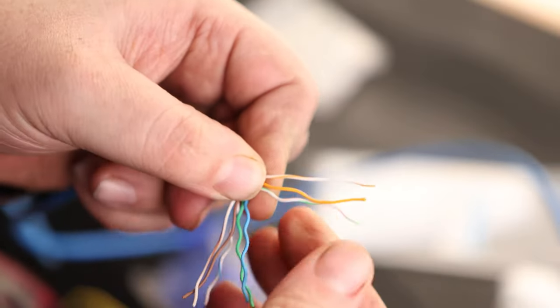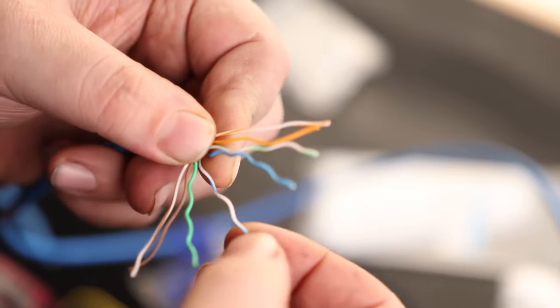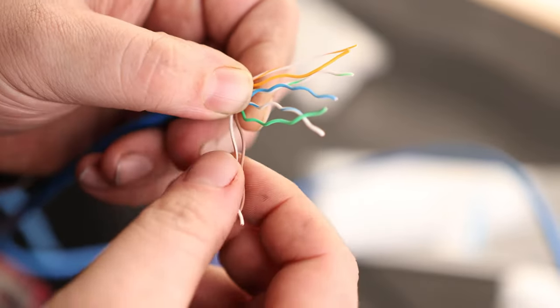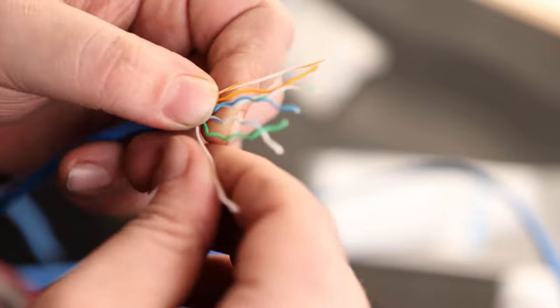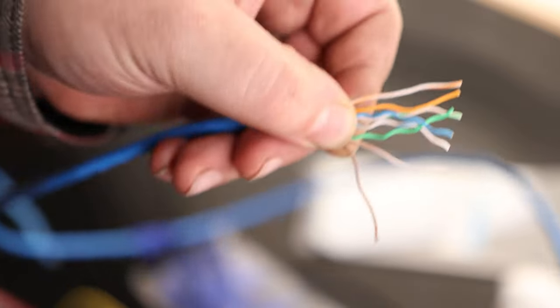So we've got orange-white-orange, green-white-blue, blue-white-green, brown-white-brown. So something like that.